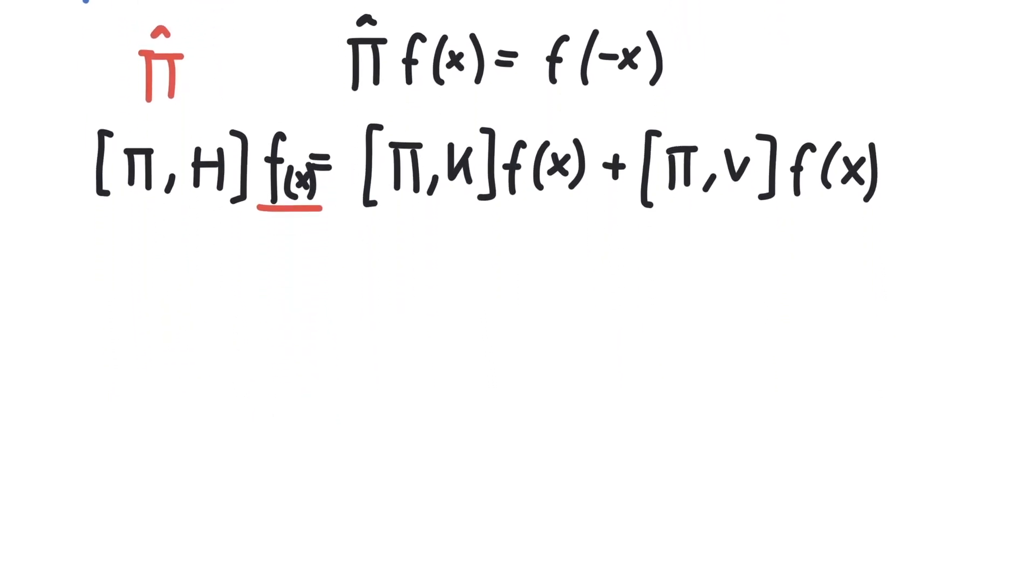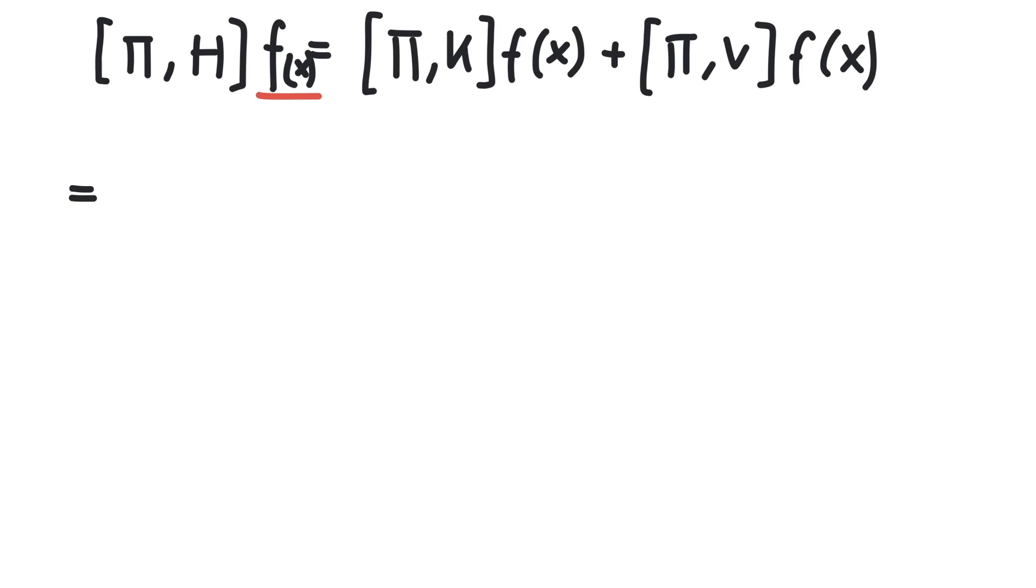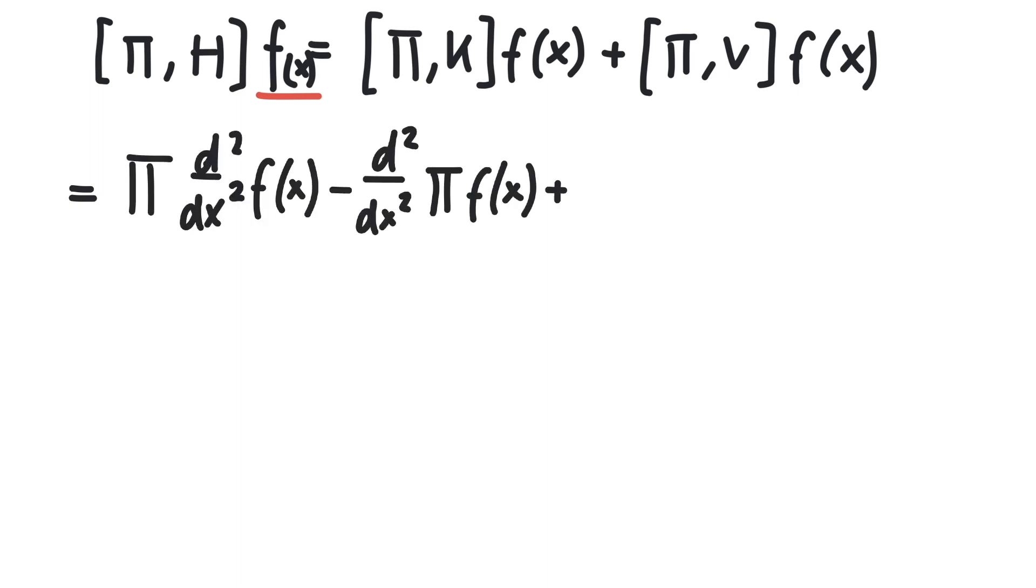Now let's see what we have here. If we expand the commutators, we get these four terms. The parity operator acting on x squared will produce minus x squared. And similarly, the parity operator on the second derivative will produce a derivative with respect to minus x.